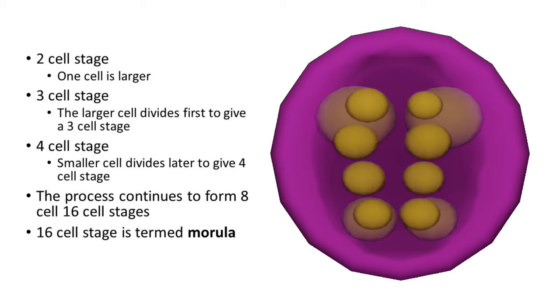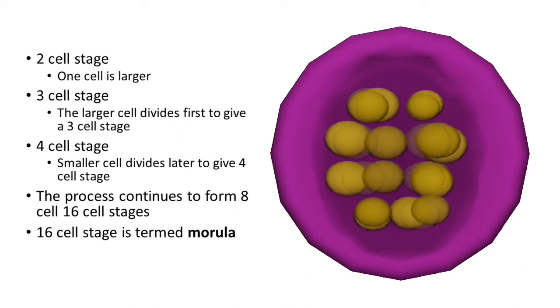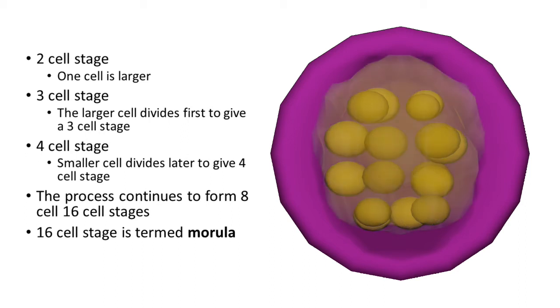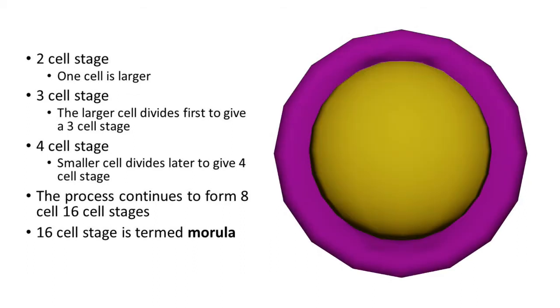The 16-cell stage is termed as morula. As the zygote reaches a 16-cell stage, we give it a new name: morula. The cell division continues.